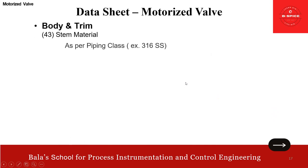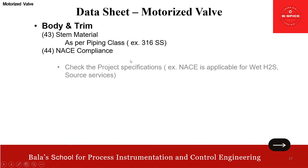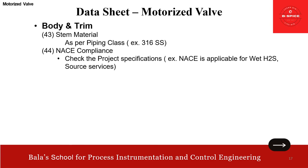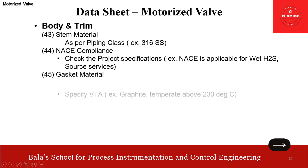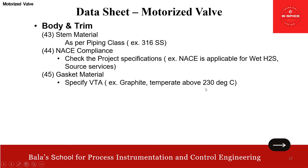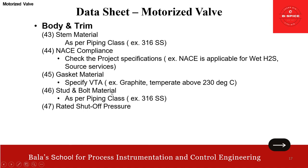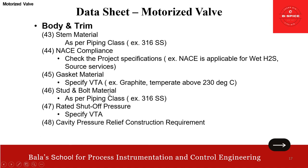Some more body and trim items: gasket material — specify VTA; graphite for temperature above 230 degrees. If it is below 230, use PTFE/Teflon. Stud and bolt material as per the piping class. Rated shutoff pressure — specify VTA. Cavity pressure relief construction requirement — this is provided to relieve the trapped fluid into the internal pipeline when the valve is closed with the fluid trapped in the body cavity. If this is not addressed, the pressure of the trapped fluid goes up abnormally. This requirement comes from the project specification.